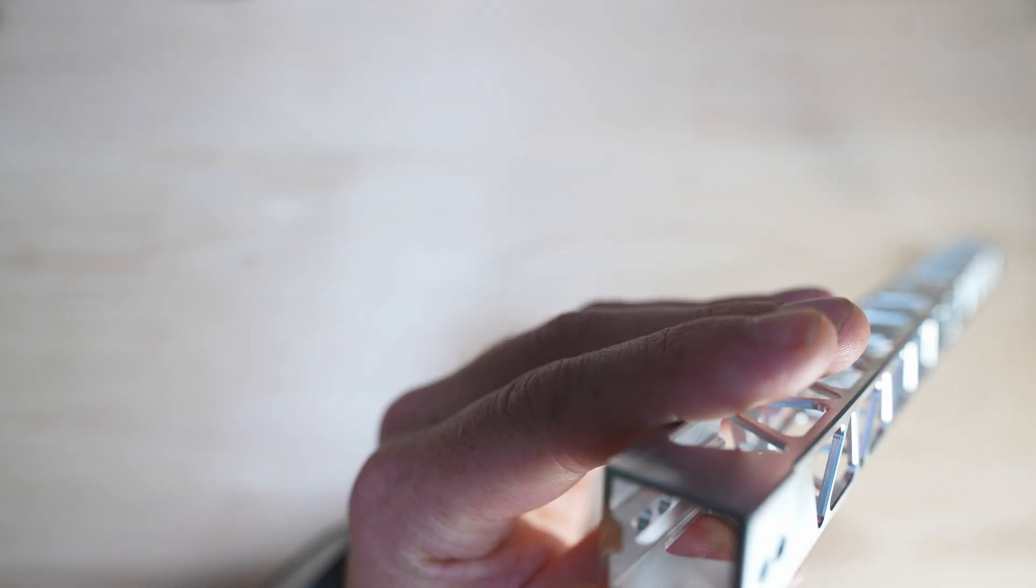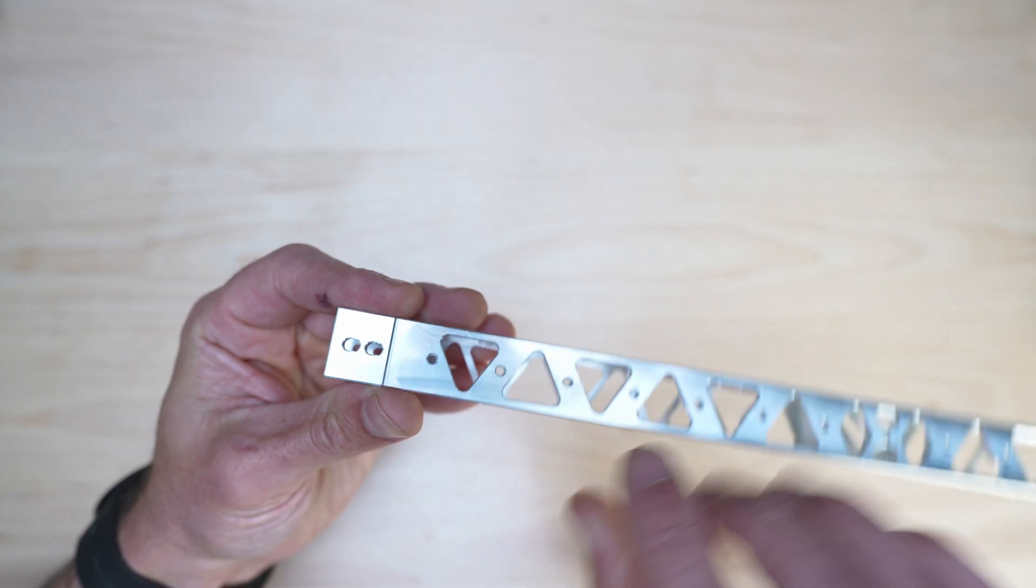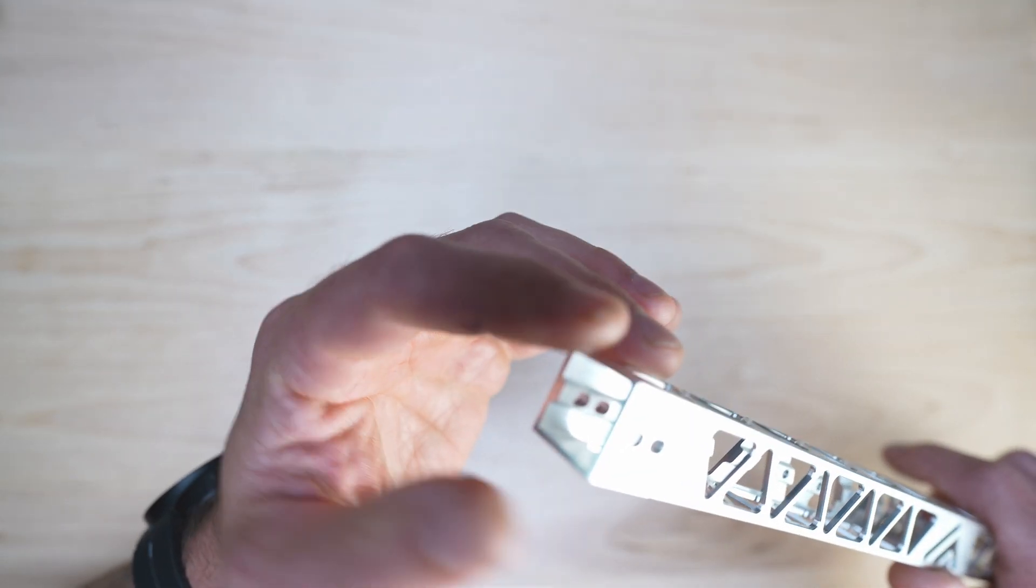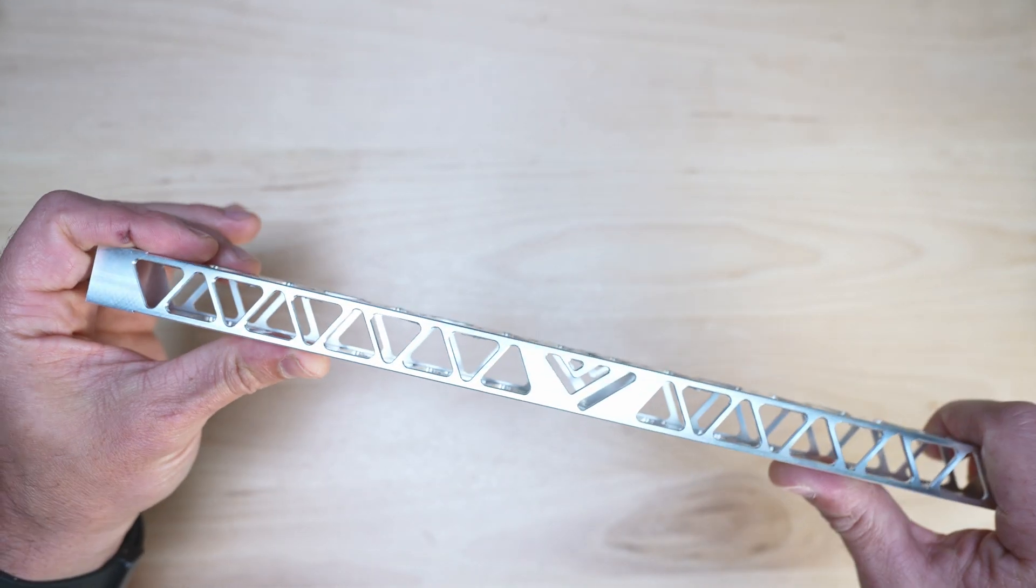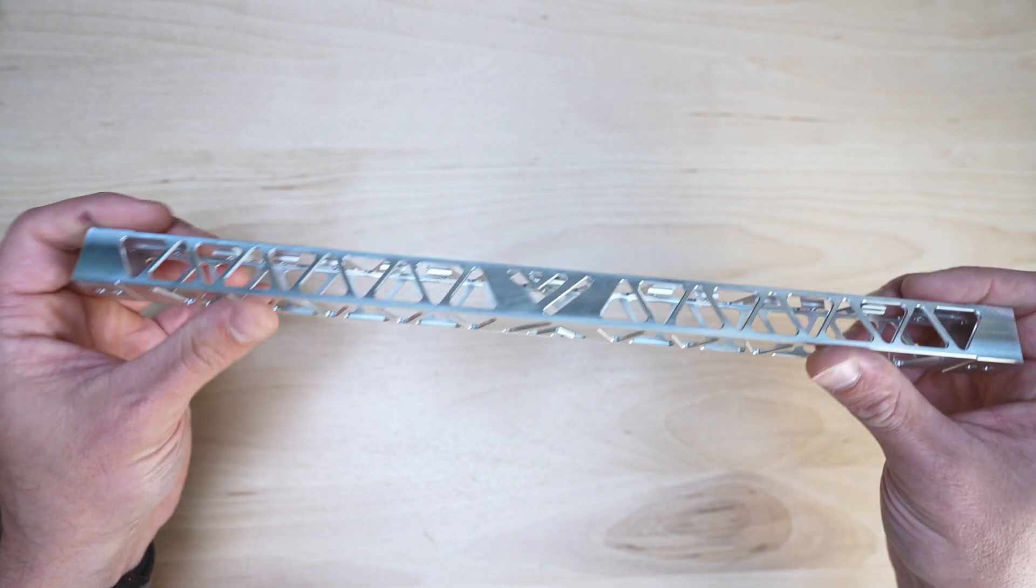It has a three millimeter thick right here to have more threads for the bolts on the rail to bolt it down, but at the same time the walls are 1.5 millimeter. It was tested in simulation, it's super stiff, it's super light.